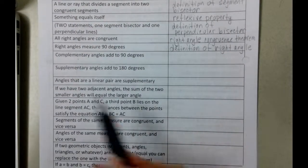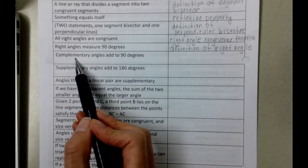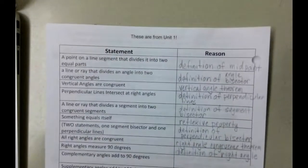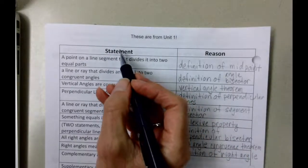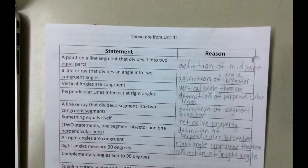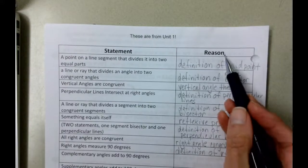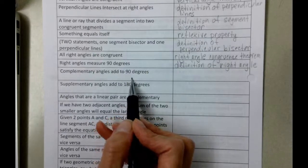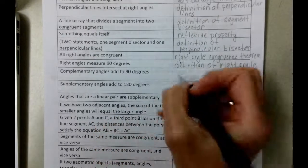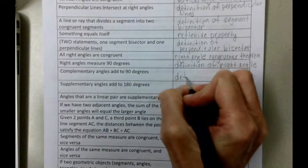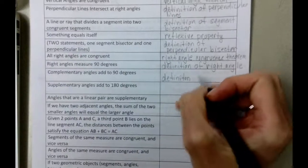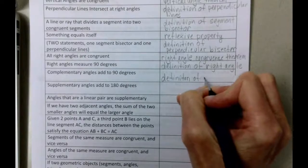Finishing up on page 14, we are starting with complementary angles add to 90 degrees. Again, a reminder that we're looking at statements that we can make about something and then we're going to write down the reason that we are allowed to make that statement. So complementary angles add to 90 degrees, well that is the definition of complementary angles.